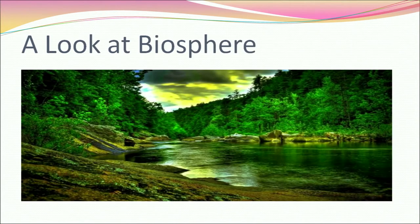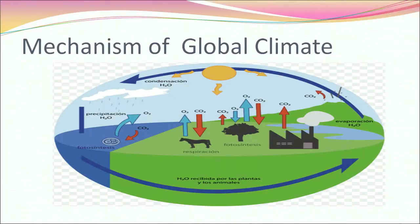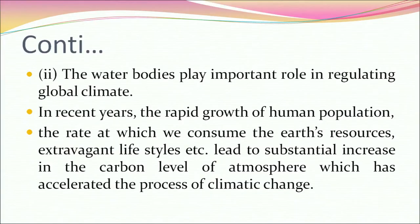Let's have a look at the biosphere and talk about global climate changes. The earth has a unique mechanism for stabilizing and controlling the global climate. Plants and animals balance the carbon dioxide level of the atmosphere, which in turn acts as a global climate thermostat, controlling temperature balance within optimum limits. Water bodies also play an important role in regulating global climate. In recent years, rapid growth of human population, the rate at which we consume the earth's resources, and extravagant lifestyles led to a substantial increase in carbon level of the atmosphere, accelerating the process of climatic change.